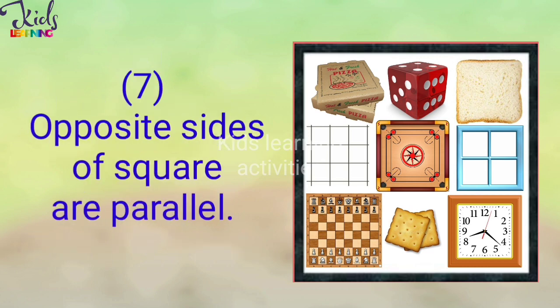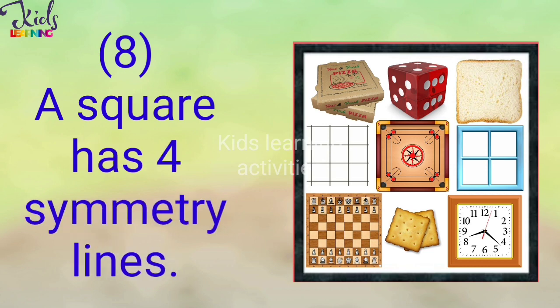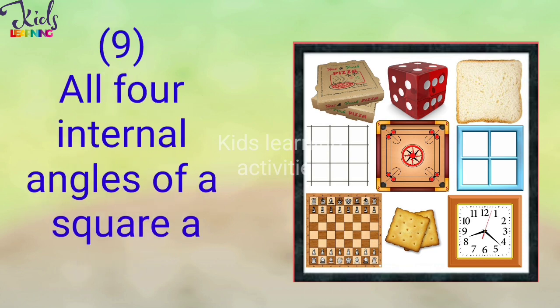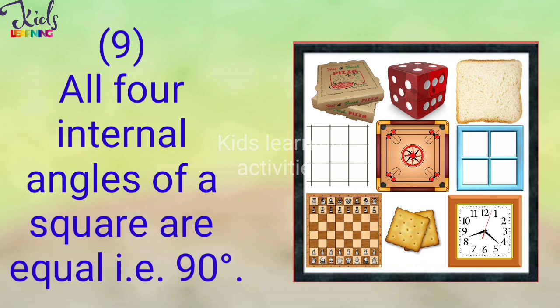Opposite sides of a square are parallel. A square has four symmetry lines. All four internal angles of a square are equal, that is 90 degrees.